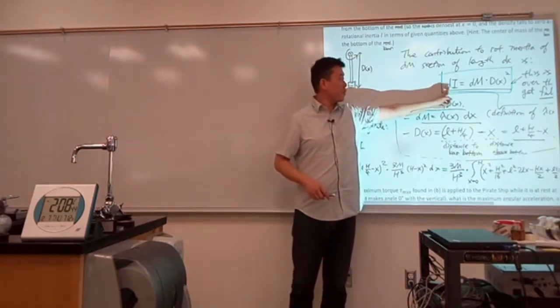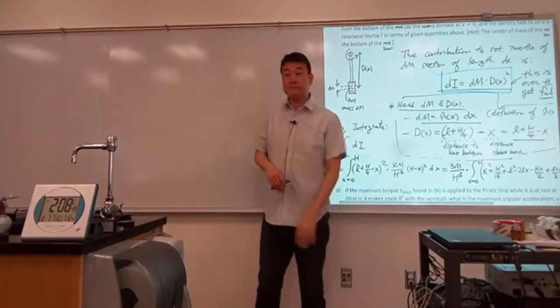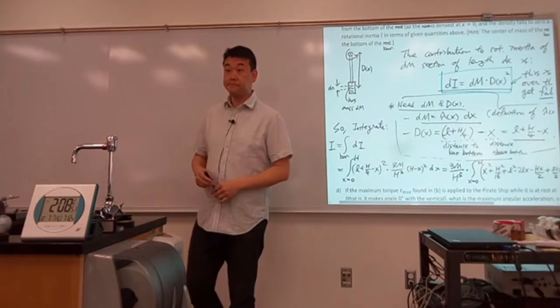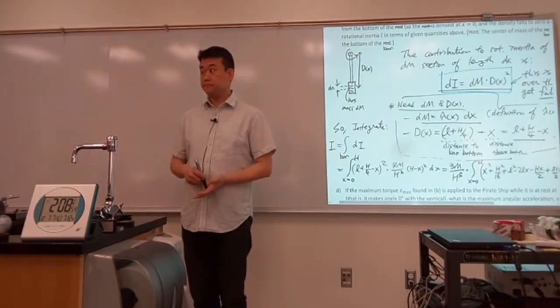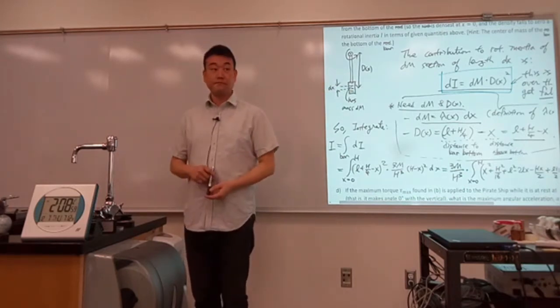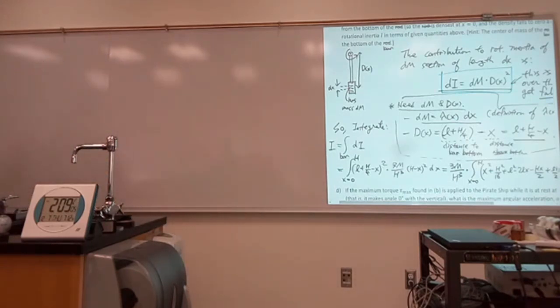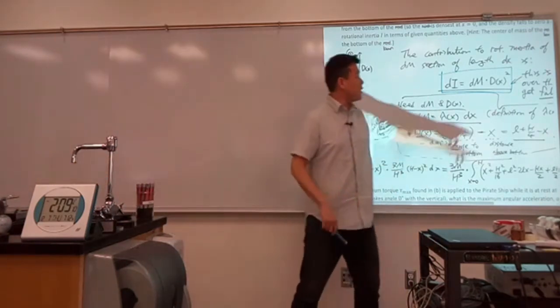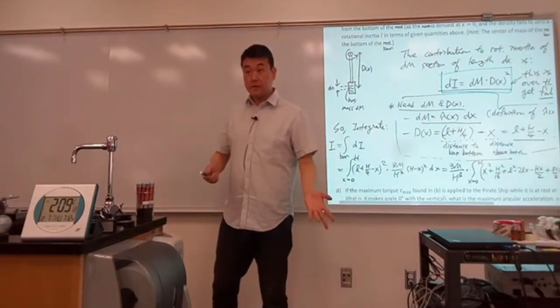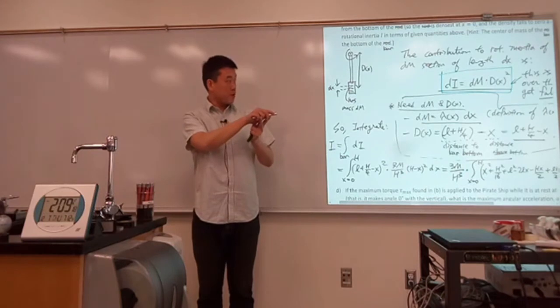So this is saying, alright, rotational inertia is equal to something. What's on the right-hand side? What does the dM stand for? What kind of physical quantity does it stand for? Mass, right? Standing for some kind of mass. And this D, it stands for distance. So the sentence that this equation is saying is that rotational inertia is equal to mass times distance squared.